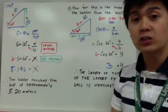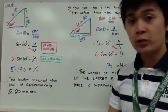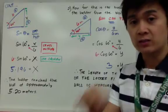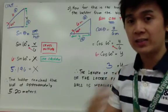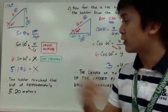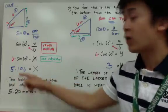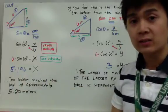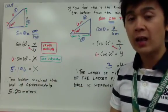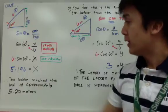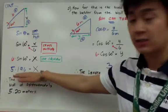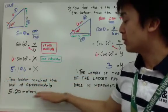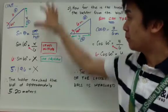You need to use your calculator to find your answer, and make sure that when using your calculator you are in degree mode. Every calculator has its own settings, so make sure your setting is in degree mode to get 5.196 as your answer. If you're not getting 5.196, check your calculator mode. Therefore, since x equals 5.196, the ladder reached the wall at approximately 5.20 meters.